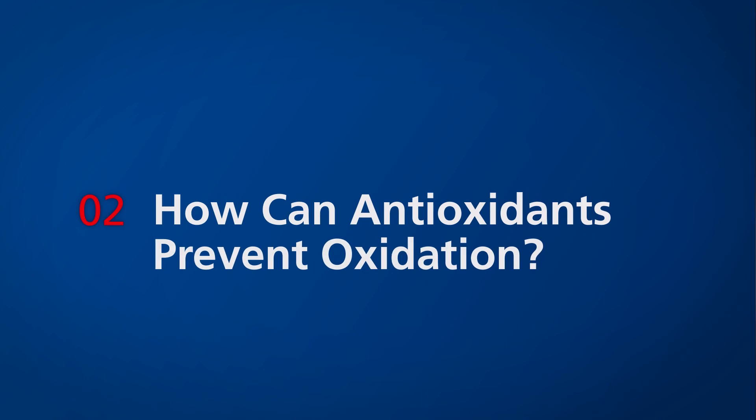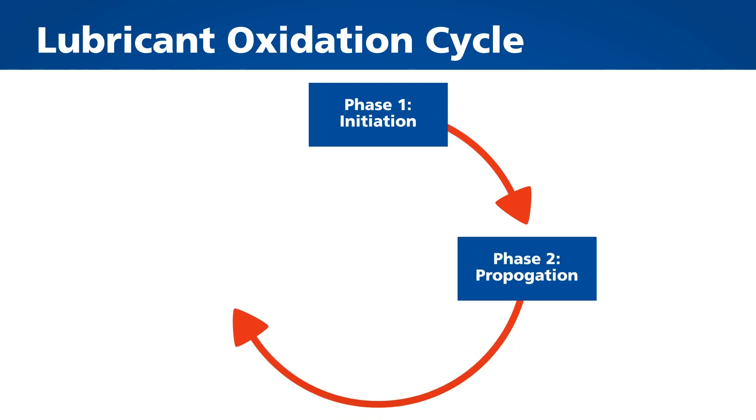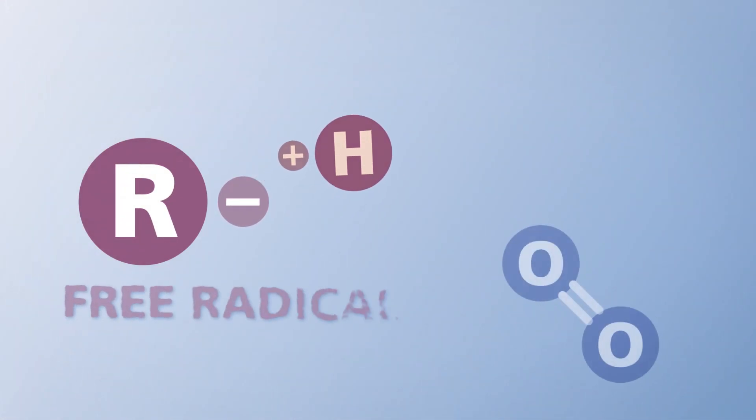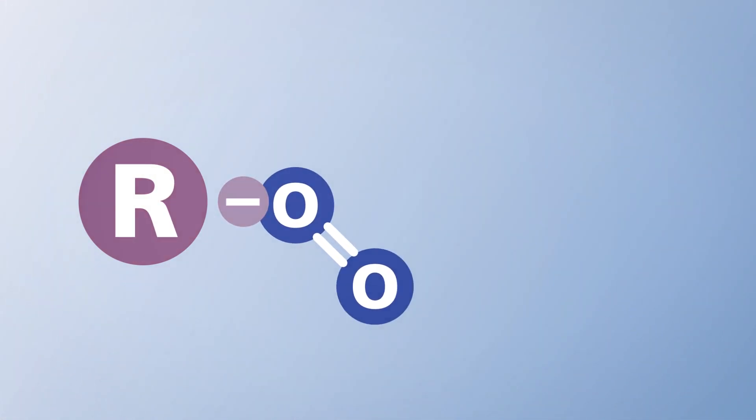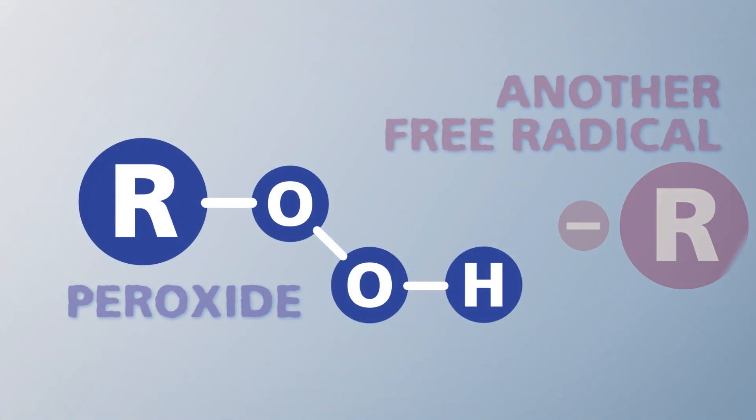How can antioxidants prevent oxidation? Lubricant oxidation happens in a cyclical process involving initiation, propagation, branching, and termination. Initiation happens when a molecule loses one or more electrons, creating reactive free radicals and peroxides. These reactive free radicals then multiply after reacting with oxygen in a process known as propagation.